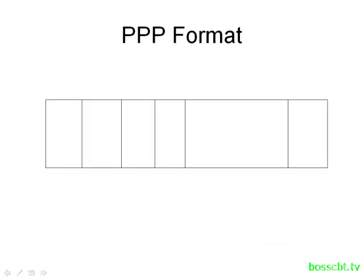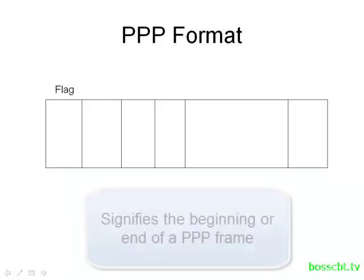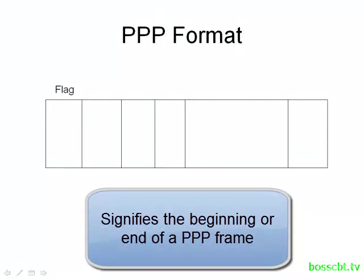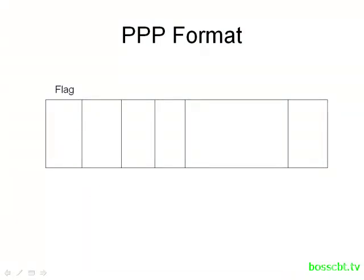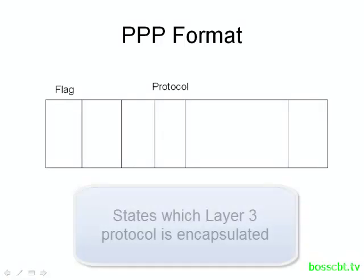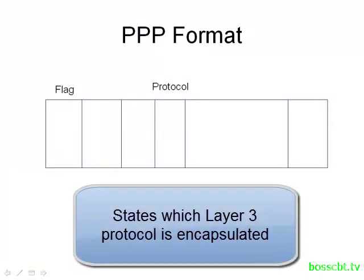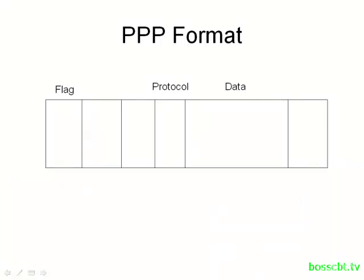This is a point-to-point protocol frame, and let's take a look at some of the more interesting fields. The first one is the flag field, which quite simply tells a router where a frame begins. When they see the flag field, they know this is the beginning of a new frame. The next field is the protocol field.